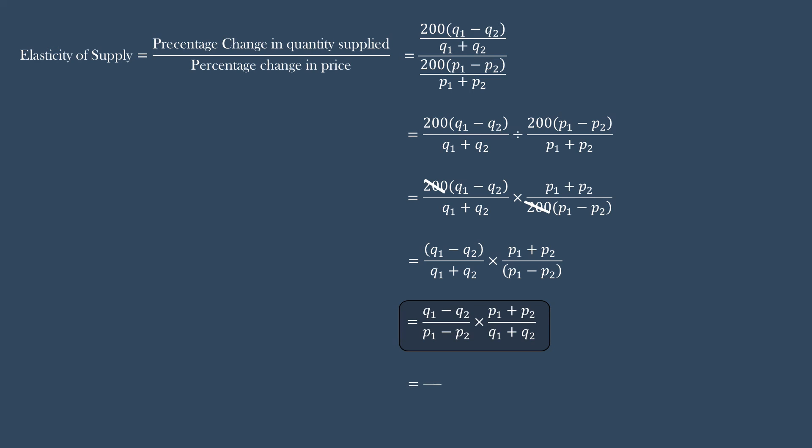Again, q1 minus q2 is change in quantity. It can be represented as delta q. In the same way, p1 minus p2 is change in price. It can be represented as delta p. This is the formula you can find in most of the textbooks.